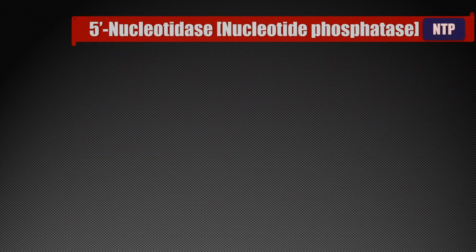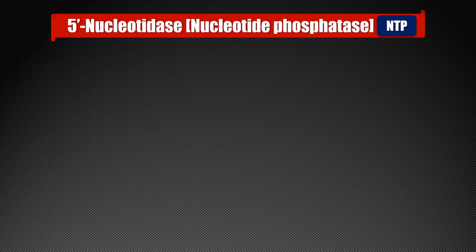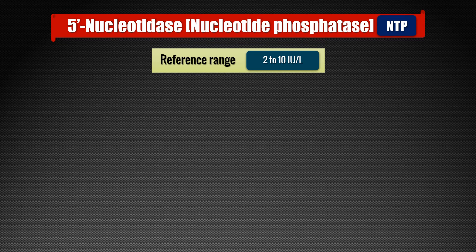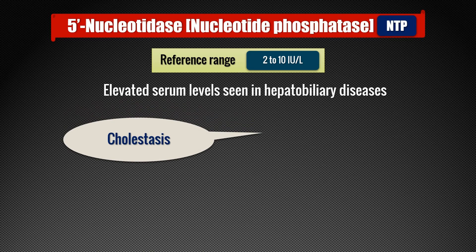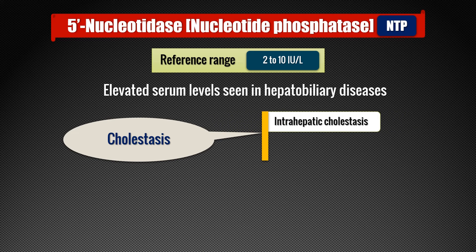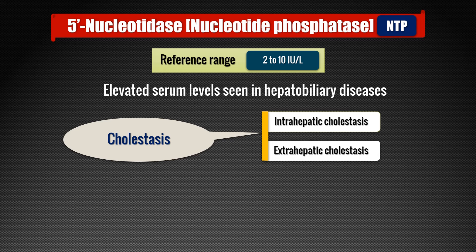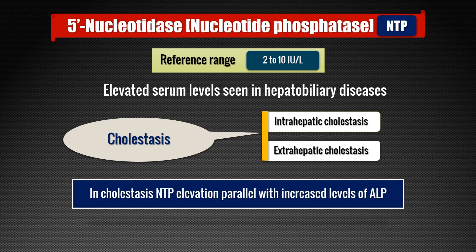The last enzyme is 5'-nucleotidase, also known as nucleotide phosphatase or NTP. The reference range for 5'-nucleotidase is about 2 to 10 international units per litre. Increased serum levels of 5'-nucleotidase are seen in hepatobiliary diseases, most commonly in cholestasis or obstruction, which could be intrahepatic or extrahepatic. Most of the time, the elevation of 5'-nucleotidase is parallel with the elevation of alkaline phosphatase.